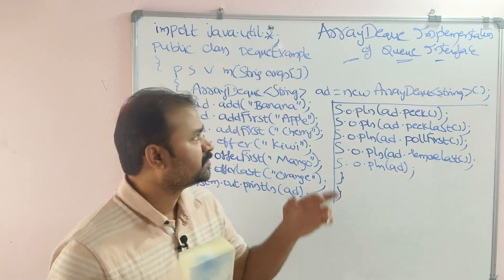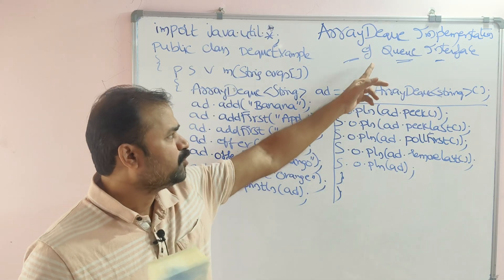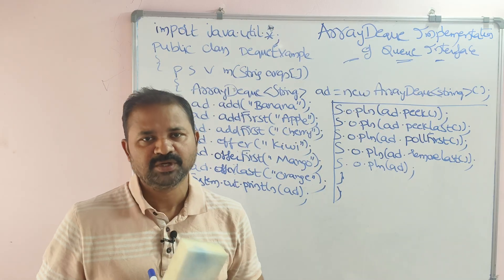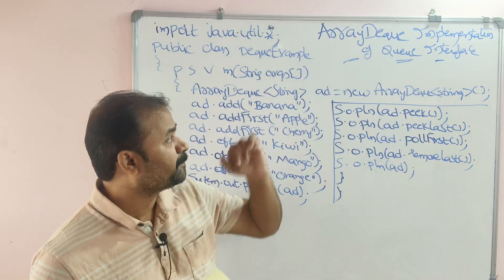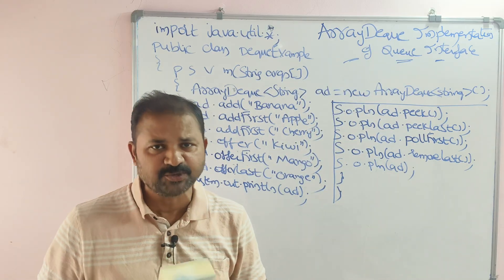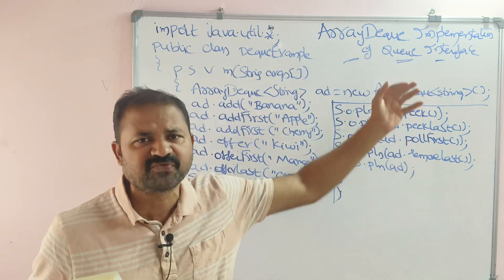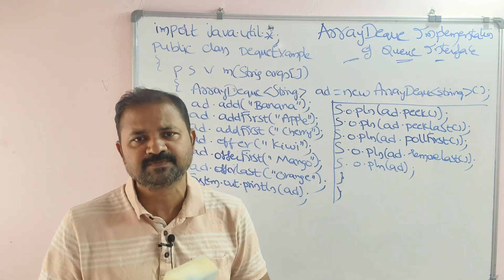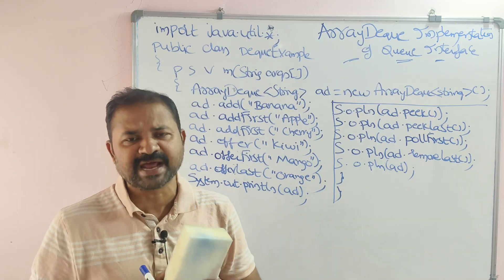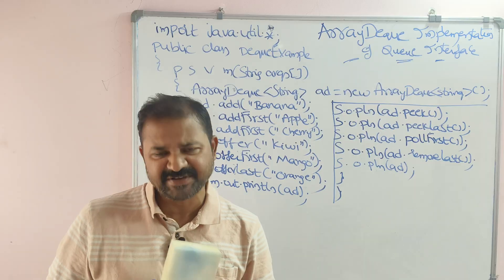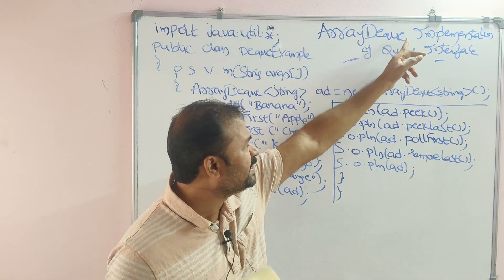Let us discuss ArrayDeque implementation of the Queue interface in Java. We know that the Queue interface is implemented with the help of three classes: the first one is LinkedList, second one is PriorityQueue, and the third one is ArrayDeque. In this video we are focusing on the ArrayDeque class of the Queue interface. The spelling is D-E-Q-U-E.